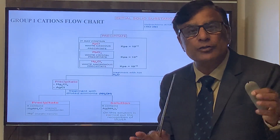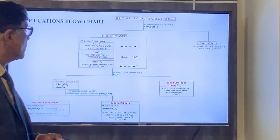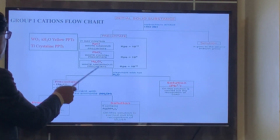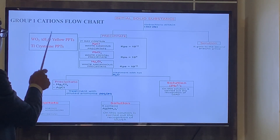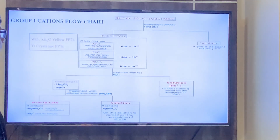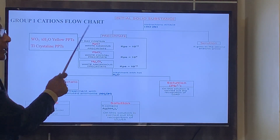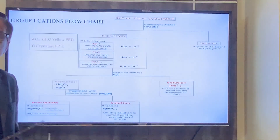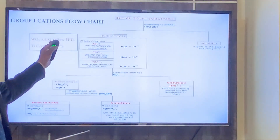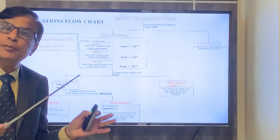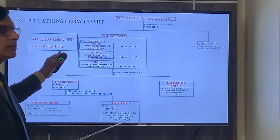If you are a postgraduate (PG) student — a master's degree student — then you have to follow this additionally: these precipitates may also be WO₃·xH₂O. If the precipitates are dark yellow in color, the precipitate may be tungsten oxide. If the precipitates are crystalline, then thallium may also be present. This information is for PG students, and the rest is for UG students, so all students from UG and PG can benefit from this video.